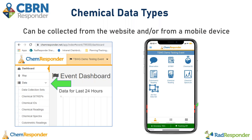Any of these data types can be collected on either the website or from the mobile application. We have a mobile application available on iOS, Android, and Windows devices. That mobile application is primarily used for data collection, though it does have some basic situational awareness features like an event map. Today I'm going to be doing the demo from the website, but it's basically the same thing — all the same principles apply and all the fields are the same regardless of whether you're on the mobile application or the website.